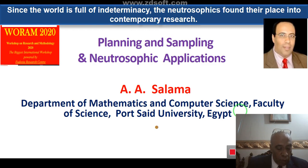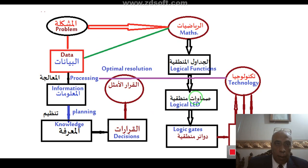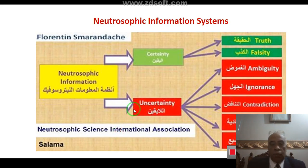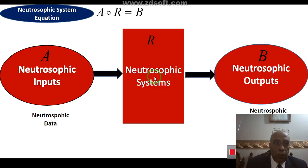When precise values are vague or incomplete in actual practice, from the problem to the knowledge to the decision, the following flow applies: mathematics problems, data, information, knowledge, decision, and optimization. The Neutrosophic Information System consists of certainty data and uncertainty data — two types of data.